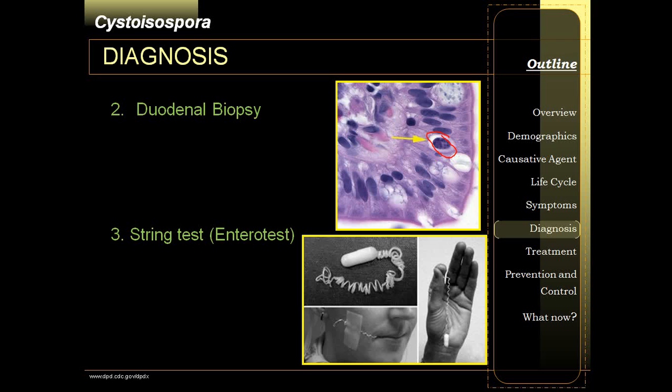You can also perform the string test, or enteral test. This pill goes inside, going into your duodenum, and the duodenal aspirate will actually contain the Isospora cysts congregating inside the duodenum.